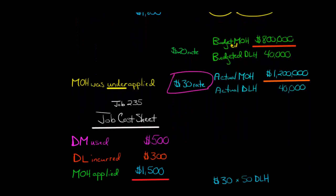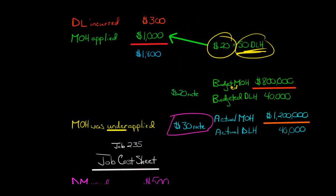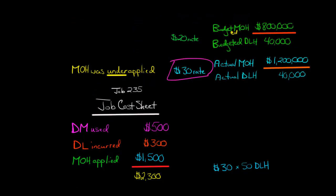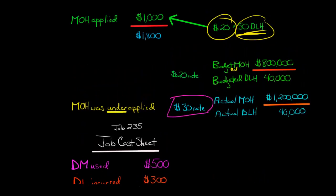So 30 times 50, that would be $1,500. If we were going to go back and say we didn't apply enough, before we had $1,000 of manufacturing overhead applied, which was 20 times 50. But now we have 30 times 50, which gives us $1,500. That's the amount of manufacturing overhead that should have been applied. So then our total cost for this job would be $2,300 so far. The job is still in process. The total cost before was $1,800, and now it's $2,300.